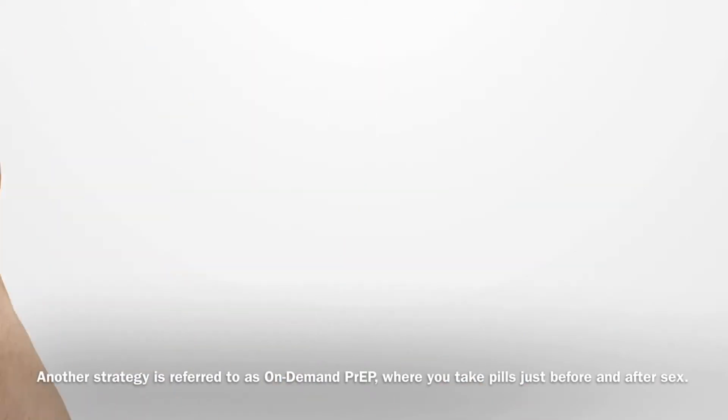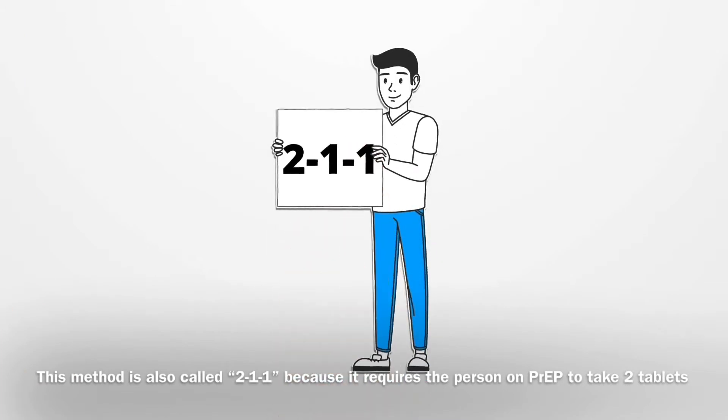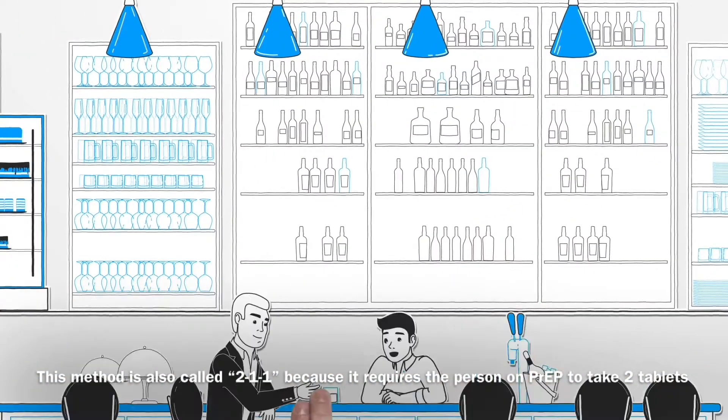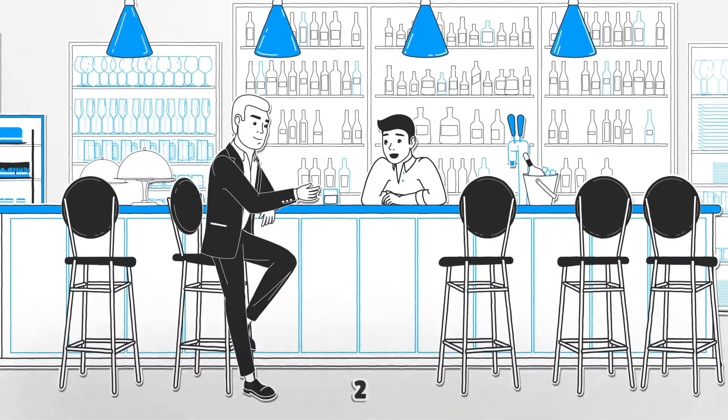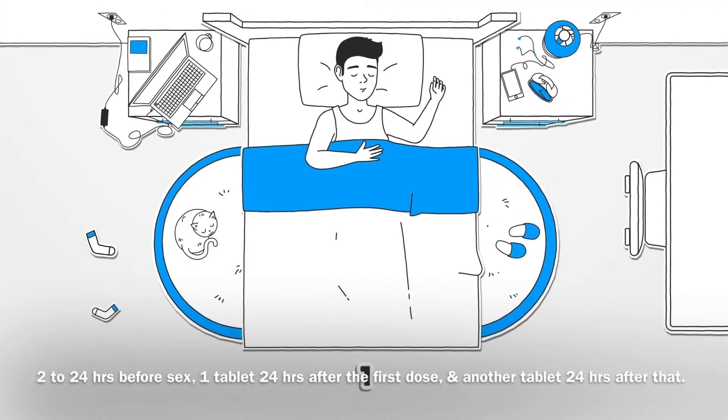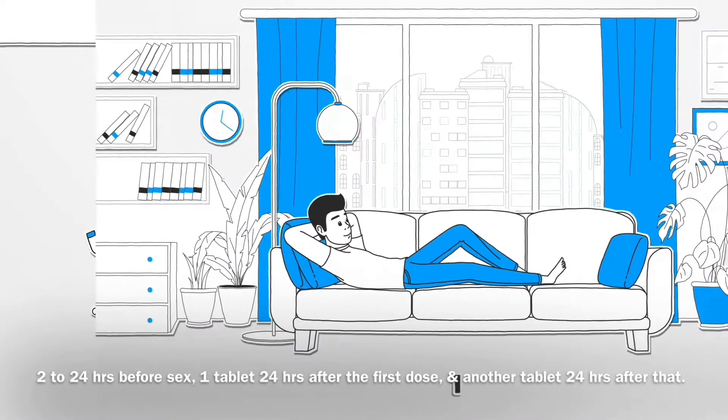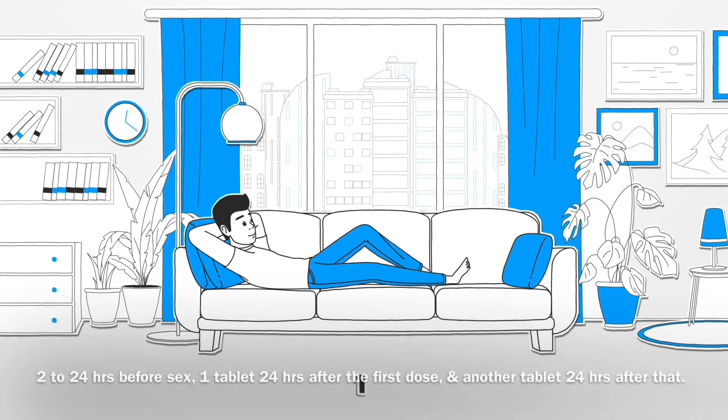Another strategy is referred to as on-demand PrEP, where you take pills just before and after sex. This method is also called 2-1-1 because it requires the person on PrEP to take two tablets 2-24 hours before sex, one tablet 24 hours after the first dose, and another tablet 24 hours after that.